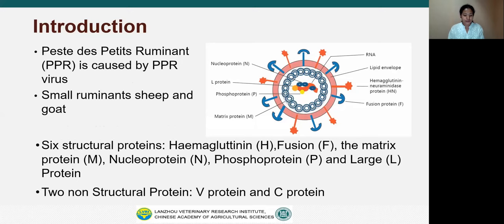Let me start with the introduction. Peste des Petits Ruminants is a highly contagious transboundary animal disease characterized by fever, stomatitis, conjunctivitis, gastroenteritis and pneumonia. This disease is caused by PPR virus, which is a negative-sense RNA virus belonging to the genus Morbillivirus of the family Paramyxoviridae.